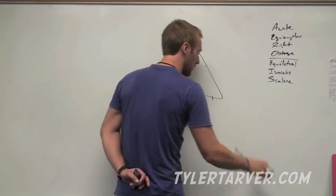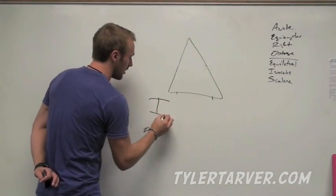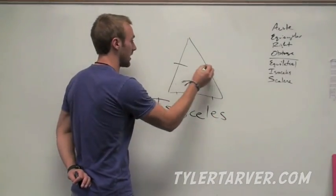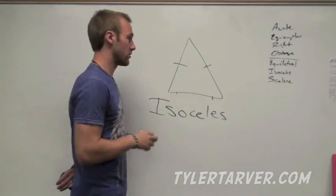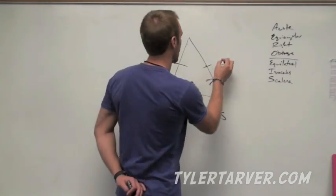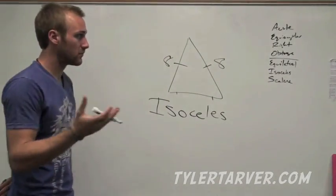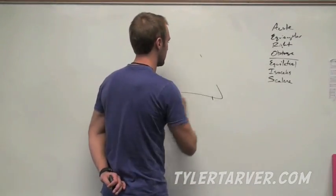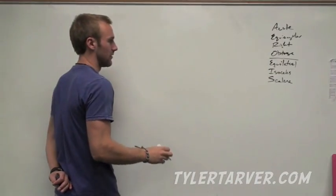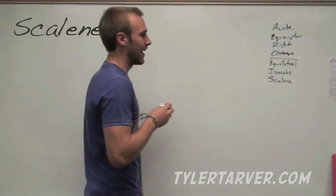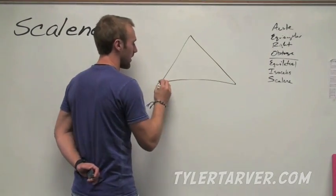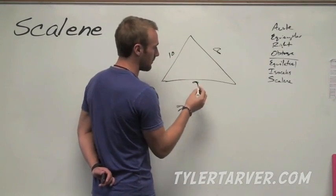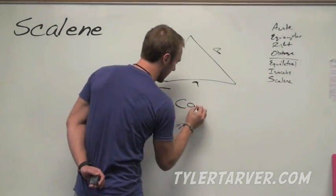We just talked about equilateral, where all the sides are the same. Next is called isosceles, which means that two of the sides are the same. Those two sides are the exact same measure — so if that's eight, this one is eight as well. Last one is called scalene. That means that none of the sides are equal — for example, this would be eight, this would be ten, this would be nine. None of them are equal, therefore it is called scalene.